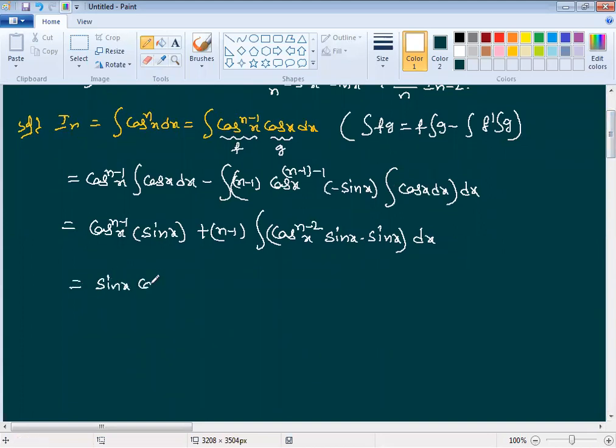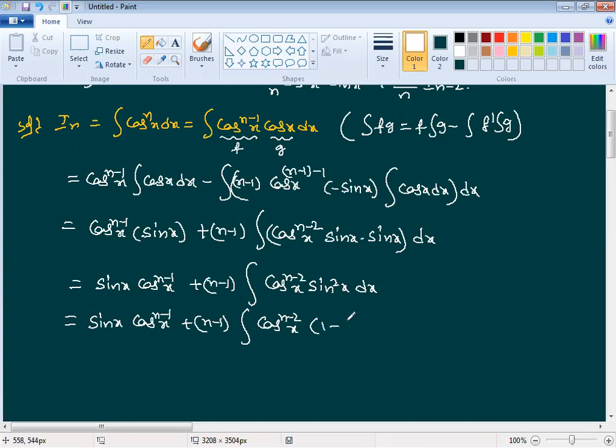This becomes sin x into cos power n minus 1 x plus n minus 1 into integral cos power n minus 2 x into sin x into sin x, which is sin square x. Now sin square x by the identity is 1 minus cos square x. So we have sin x cos power n minus 1 x plus n minus 1 into integral cos power n minus 2 x into 1 minus cos square x dx.